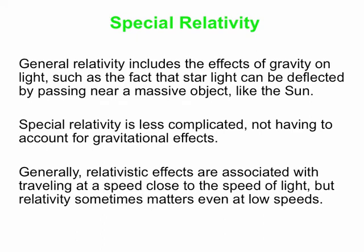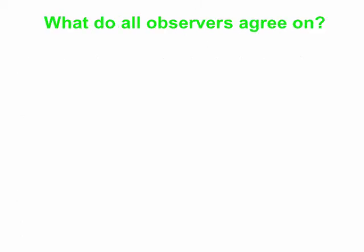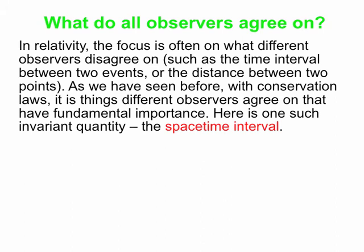Relativistic effects are associated with traveling at a speed close to the speed of light, but relativity even sometimes matters at low speeds — magnetic effects can actually be viewed as a kind of relativistic phenomena. So what do all observers agree on? Often people disagree on various things; things depend on the reference frame you're in. But as we've seen in physics, conservation laws and invariant quantities are very important. Here is one such invariant quantity that applies in relativity — it's called the space-time interval.